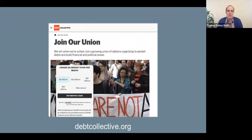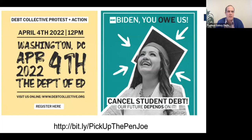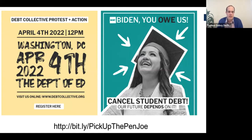If you aren't a member of the Debt Collective, I'd encourage you to join — we have a zero-dollar membership option because we know we're organizing people who sometimes can't come up with dues. We're fighting for full cancellation for everyone beyond these targeted approaches. If you live near Washington DC or can get there at noon on April 4th, we're holding a Debtors' Assembly rally to push for full cancellation for everyone.